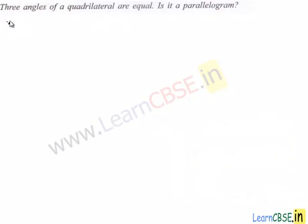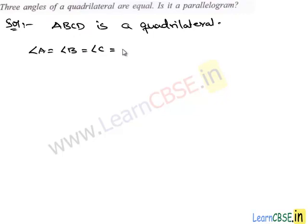So let's work out the problem. Here we take ABCD is a quadrilateral. In this question we are given three angles of the quadrilateral are equal, therefore we assume angle A, angle B and angle C are equal and they are equal to x degrees.